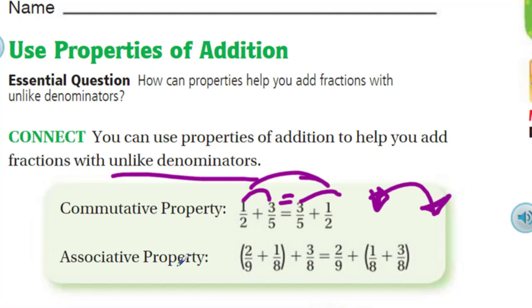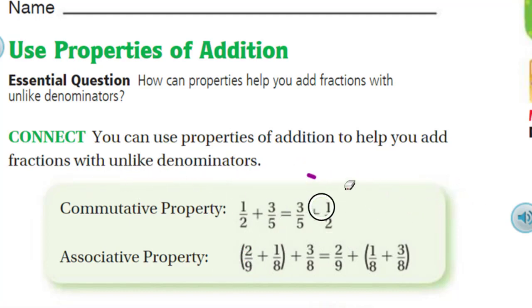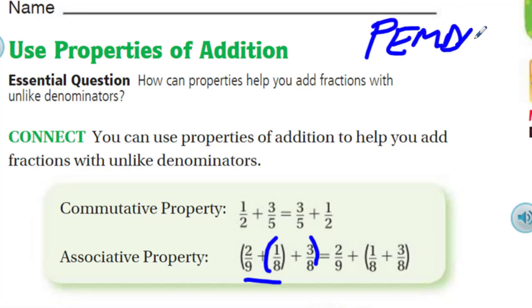Also, we have the associative property. This kind of thing — associated is like who you kind of associate with. How are you going to group them? Here it says two-ninths plus one-eighth plus three-eighths is the same as if you group up the one-eighth and the three-eighths together and leave the two-ninths. You can see how these are grouped together, but then this time, these two are grouped together. Parentheses tell which operation to do first, because we learned PEMDAS, and that's the very first one: P.